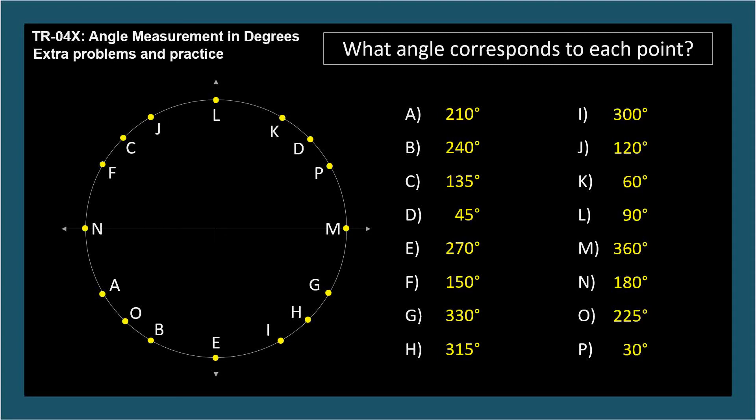Each point on the circle represents the standard position angle whose terminal side passes through it. Thus a point on a circle can denote an angle and an angle can denote a point on a circle.